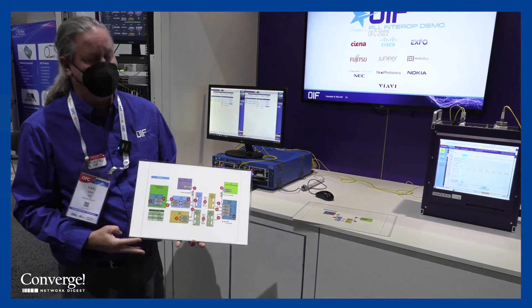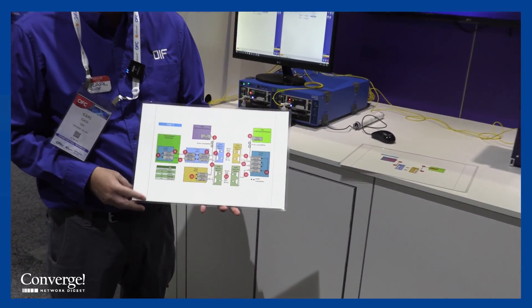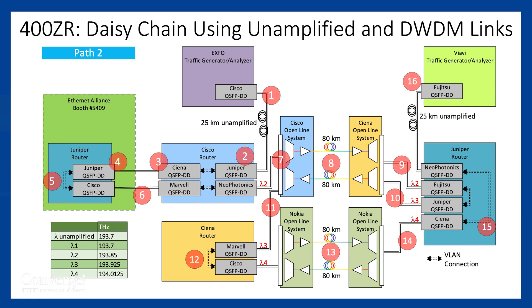The second path is a true round-robin of 14 QSFP DD modules. I start at the EXFO test equipment, go to a Cisco router, then optical fiber to the Ethernet Alliance booth, which loops back to my Cisco router. From the Cisco router I go through the optical line system to my Juniper router on one wavelength. I loop the Juniper router back on a second wavelength to the Sienna router, then loop the Sienna router through a Nokia line system. I've got three wavelengths in this path to the Juniper router one final time, and then finally back to the VIAVI test equipment.